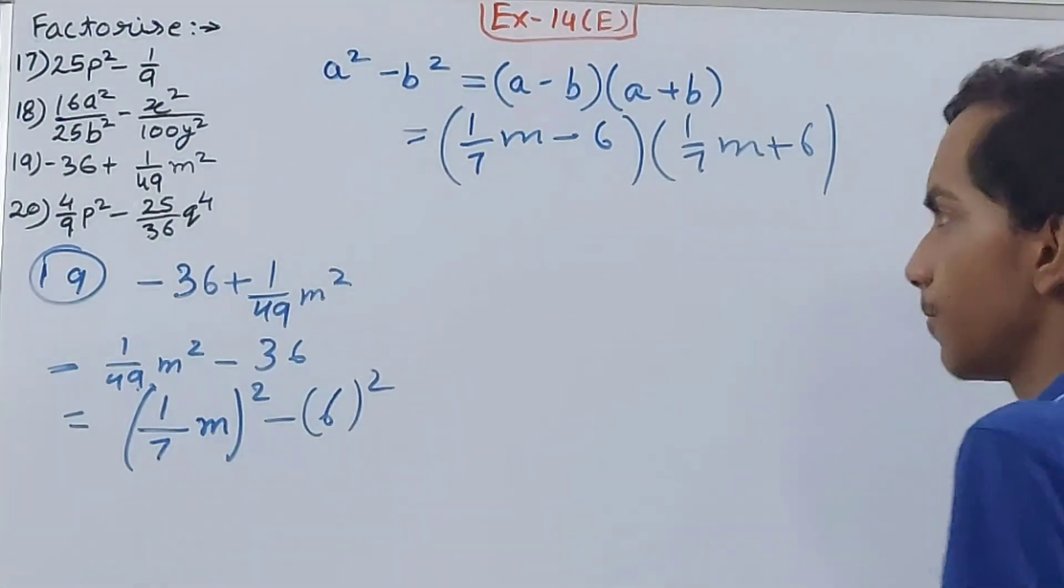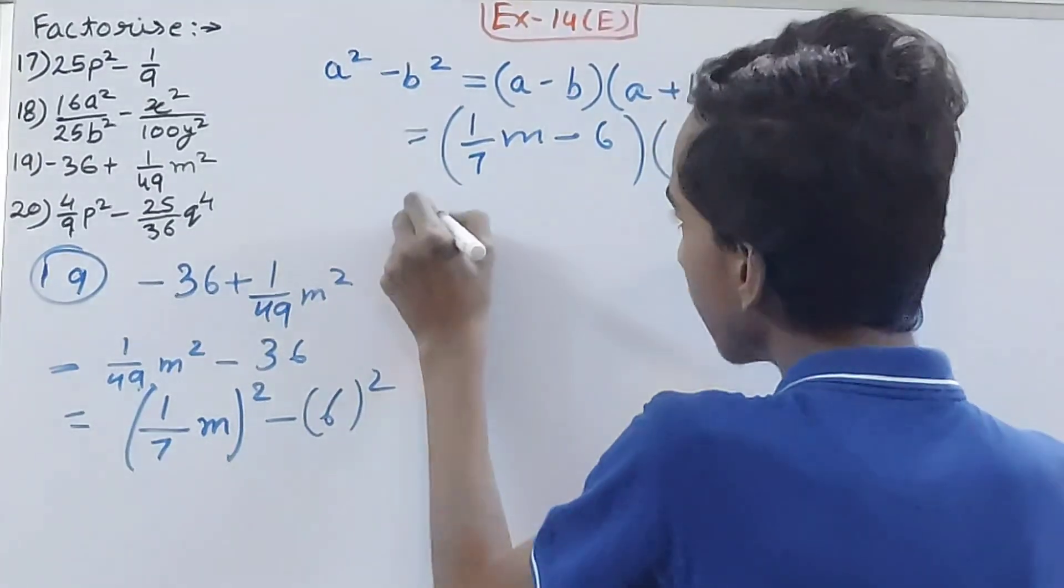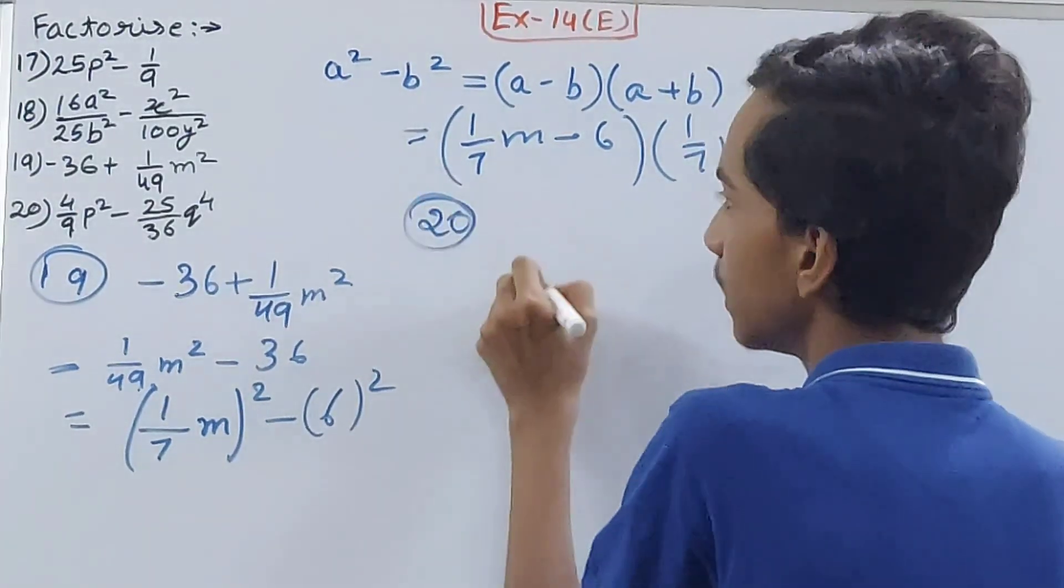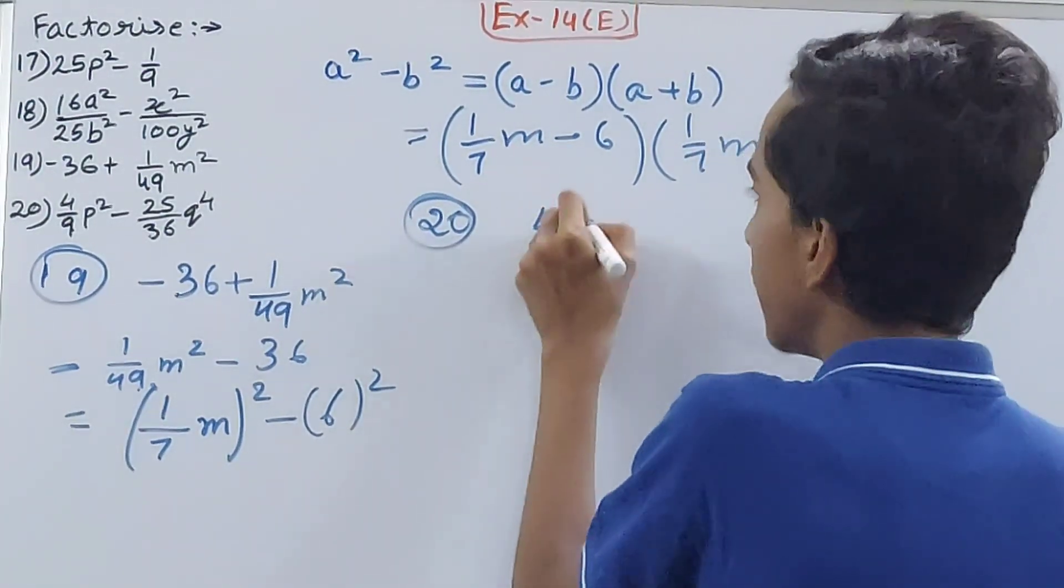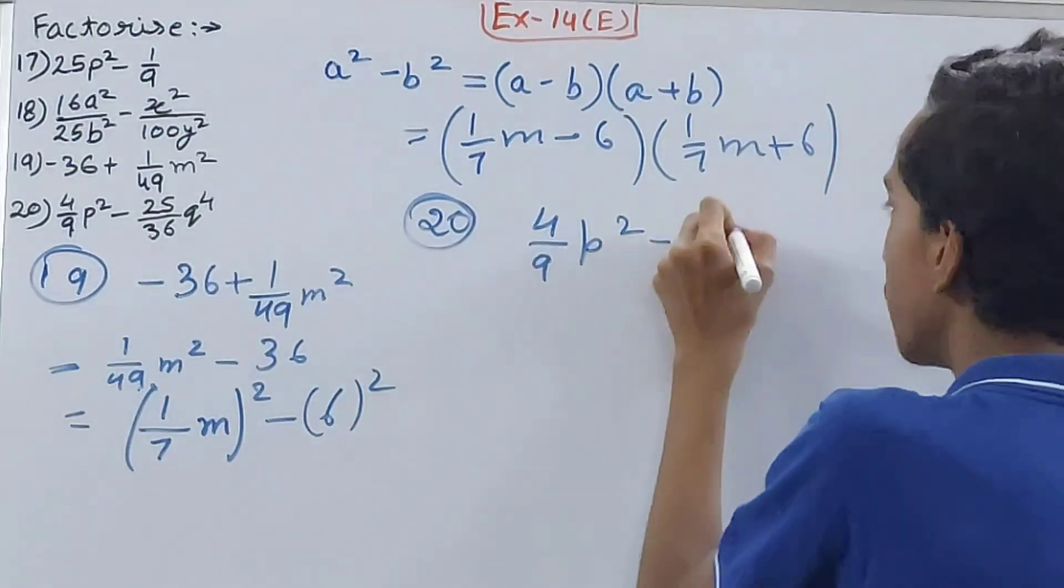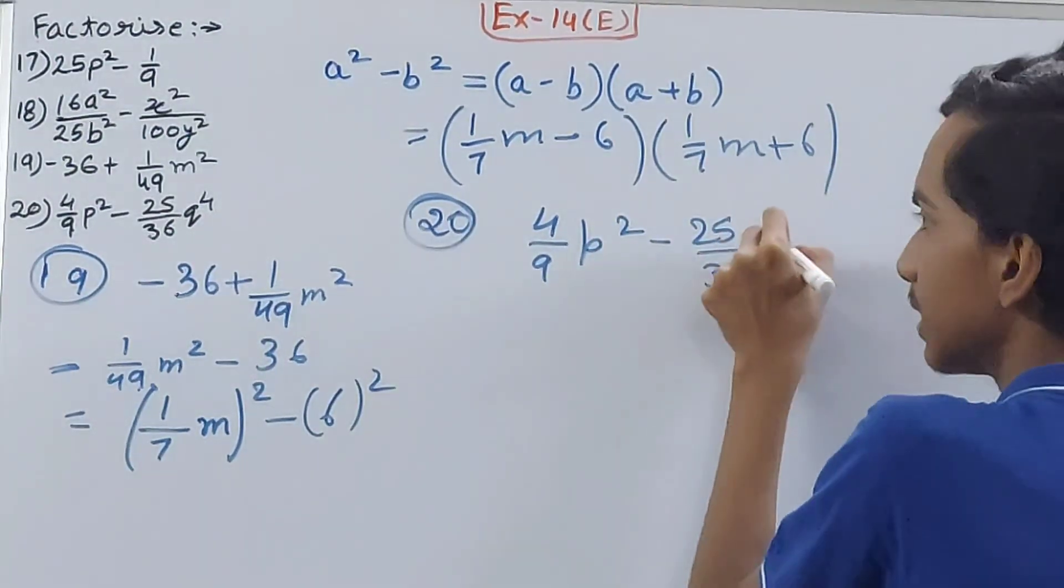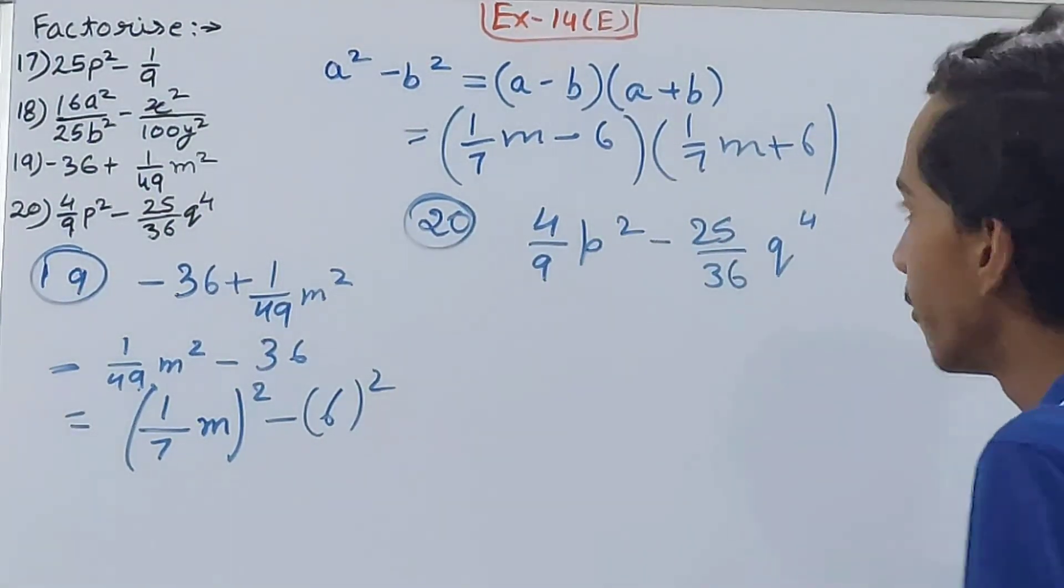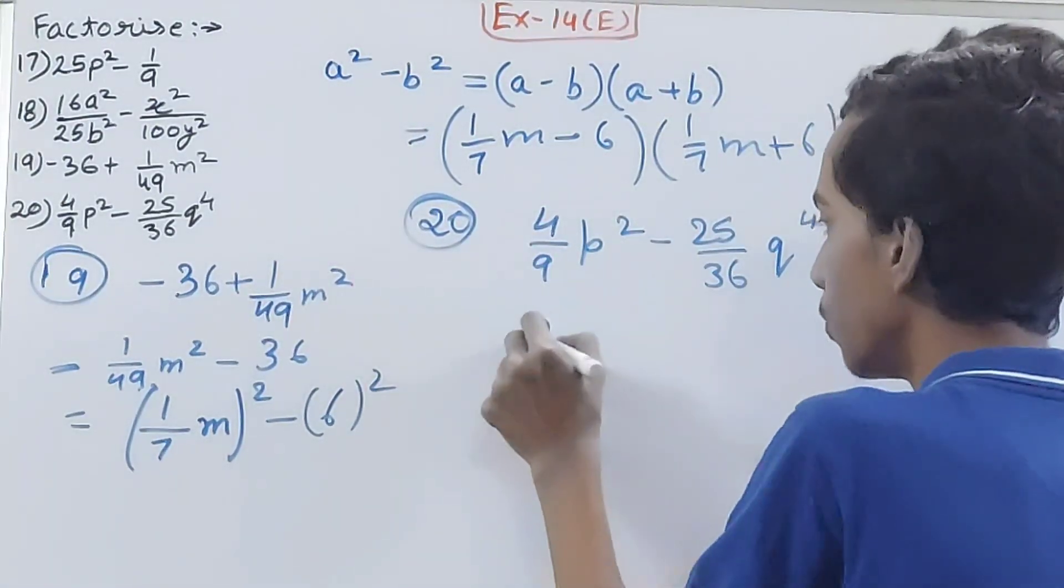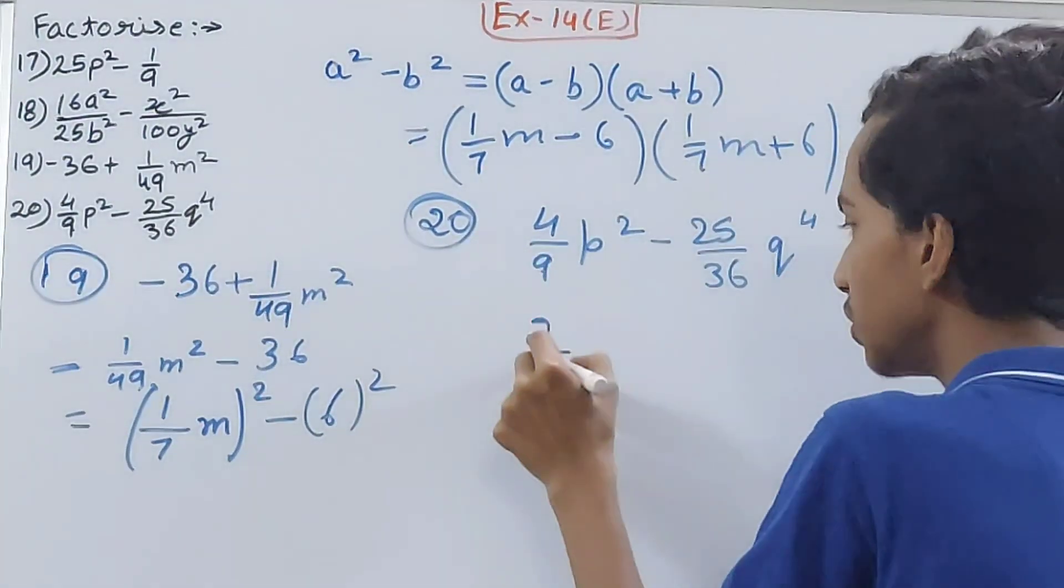Now see the 20th question: 4/9p² minus 25/36q⁴. Very simple. See, 4 is the square of 2, and upon 9 is the square of 3. p² is the square of p. We have written it as (2/3p)².